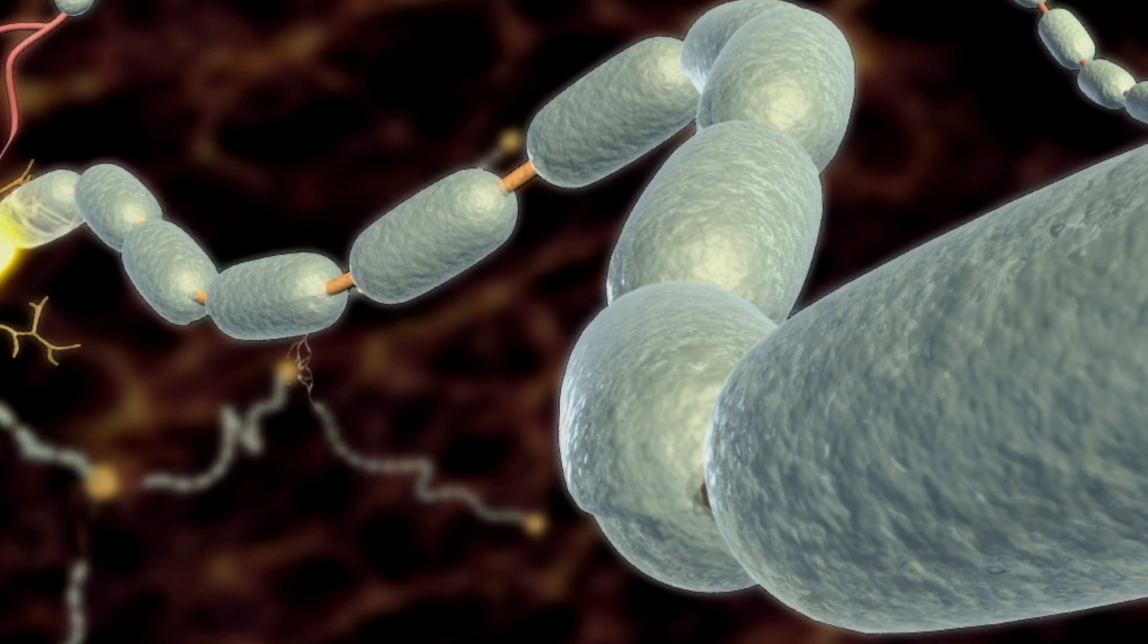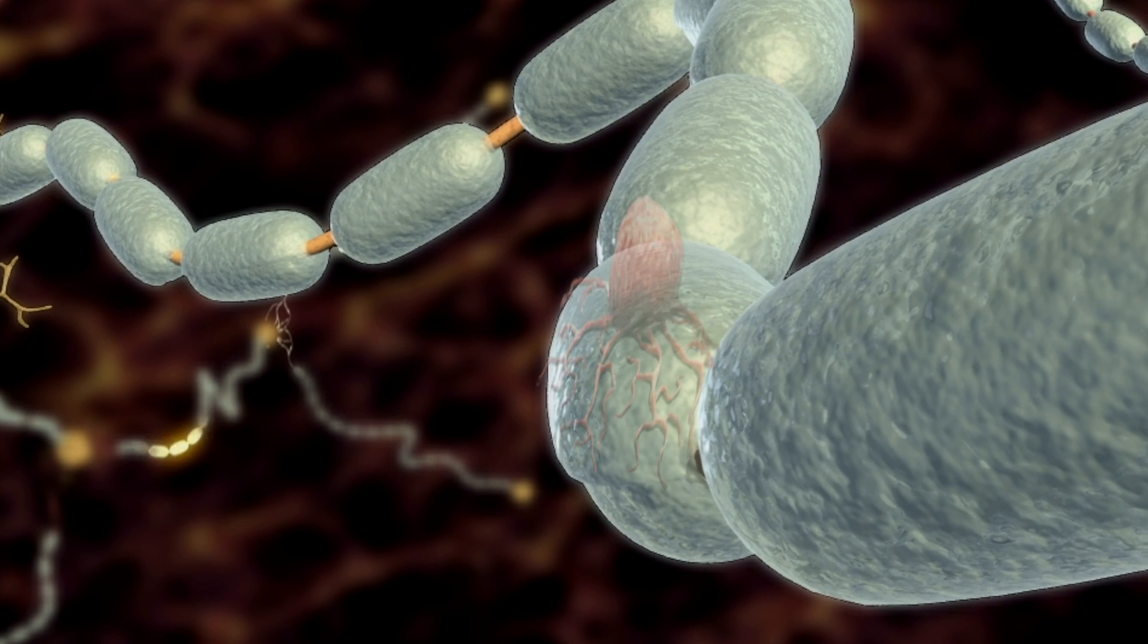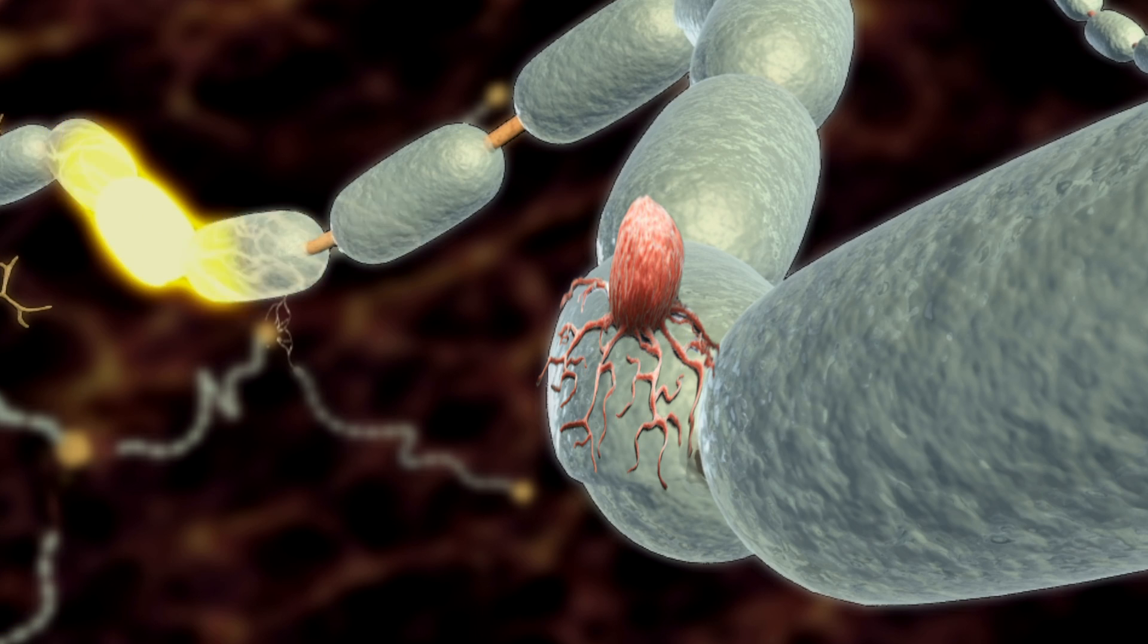Acoustic neuroma usually arises from the schwann cells covering the nerve and grows slowly, averaging about 1 mm increase in size per year.